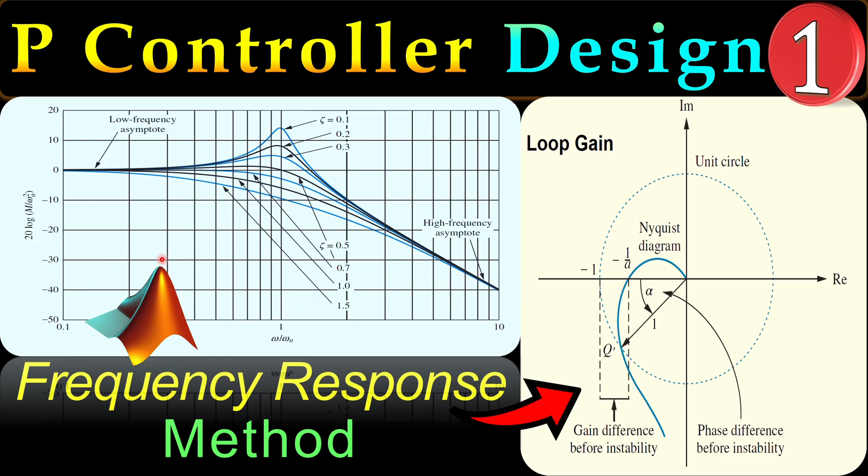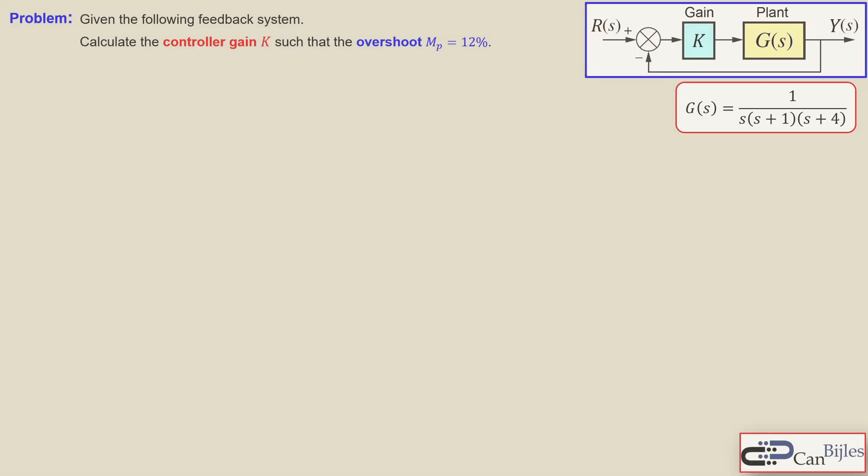Let's look at our example. We have the following situation where the problem is: Given the following feedback system, calculate the controller gain K, which is a proportional controller, such that the overshoot is 12%. This is the transfer function of the plant and this is a unity gain feedback configuration.